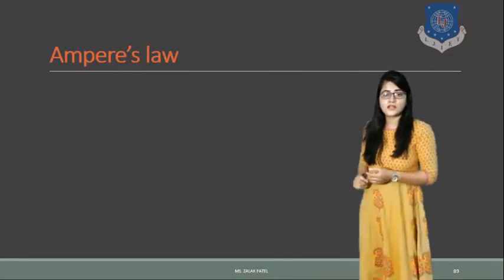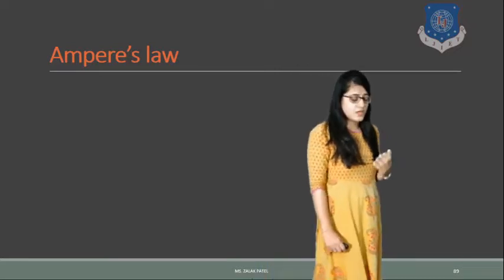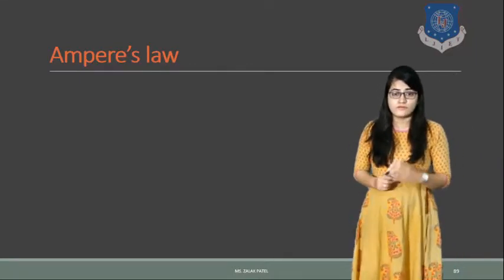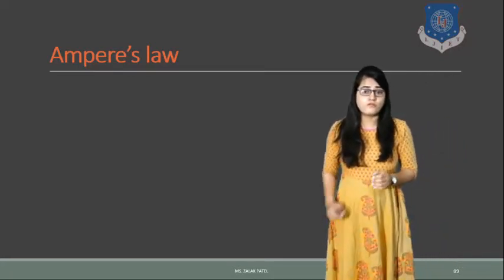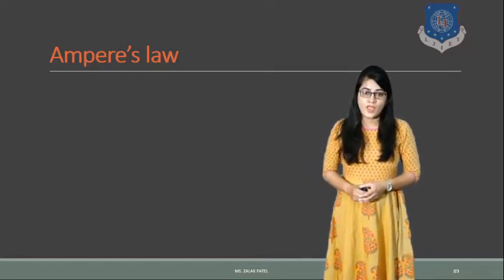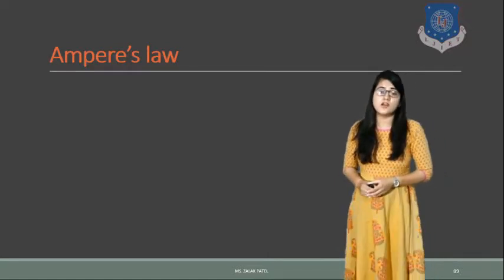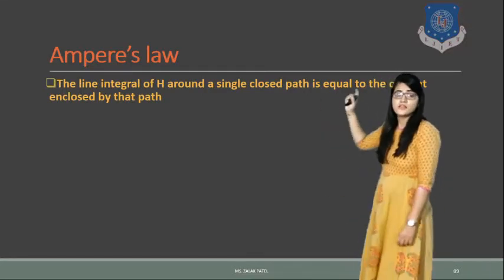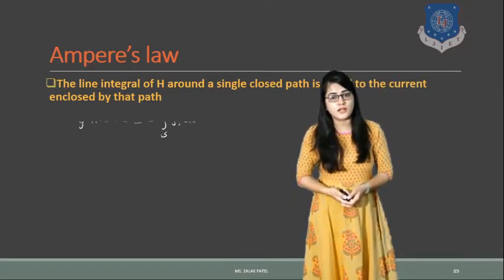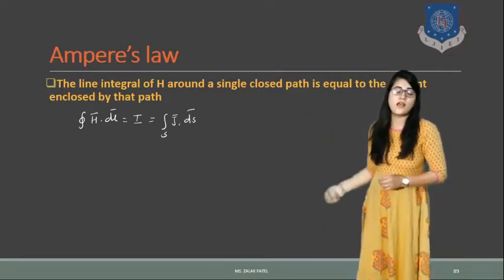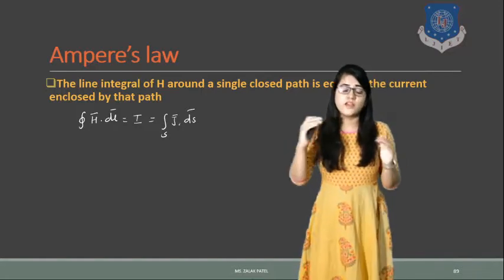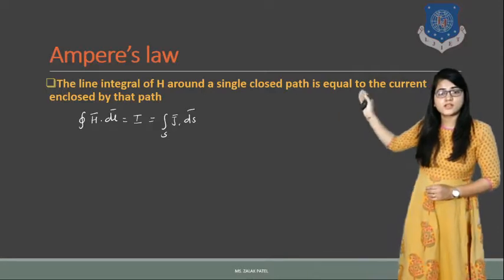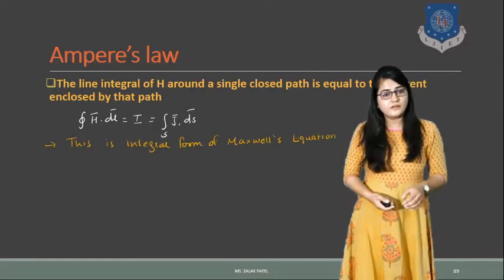The second law is Ampere's circuital law. Whenever we take the line integration of magnetic field intensity H over a closed path, it gives us the total current enclosed. So the integration of H dot dL equals I. Current density J equals I upon A, so I equals the surface integration of J dS, since current density times area gives the total current.